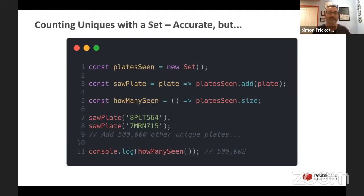It's built for recording unique collections of things without duplicates. So every time I add something to the set with my sawPlate function, it's going to get added to the set. And if that license plate has already been seen before, it's not going to get added a second time because the set doesn't allow for duplicates. And if I want to know how many different vehicles have passed by this intersection or this traffic light or whatever it is today, then I have a howManySeen function that just simply uses the size property on the set.